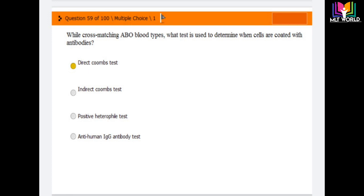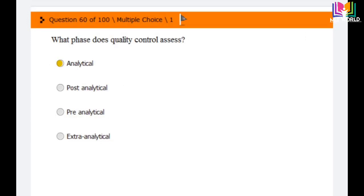Question number 59: While cross-matching ABO blood type, what test is used to determine when cells are coated with antibodies? Options are direct Coombs test, indirect Coombs test, positive heterophile test, and anti-human IgG antibody test. The correct answer is direct Coombs test. While cross-matching blood type, direct Coombs test is used to determine when cells are coated with antibodies.